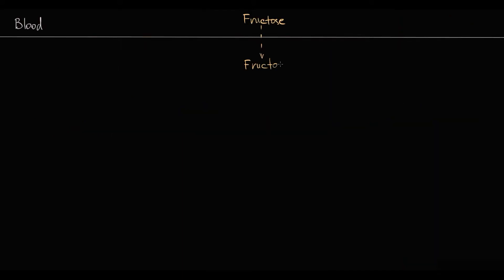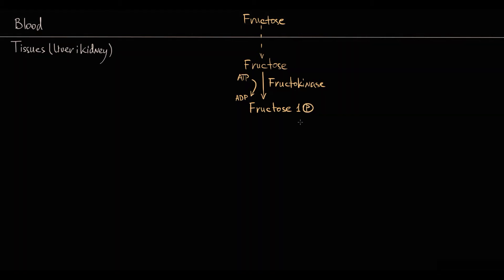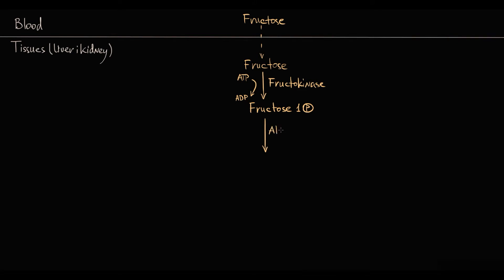In tissues there are two pathways to metabolize fructose. Most fructose molecules are trapped by fructokinase, which phosphorylates fructose to form fructose 1-phosphate — this phosphate group prevents fructose from leaving the cell. Fructose 1-phosphate is then degraded by aldolase B to dihydroxyacetone phosphate and glyceraldehyde, and both metabolites are converted to glyceraldehyde 3-phosphate, which is metabolized in glycolysis.